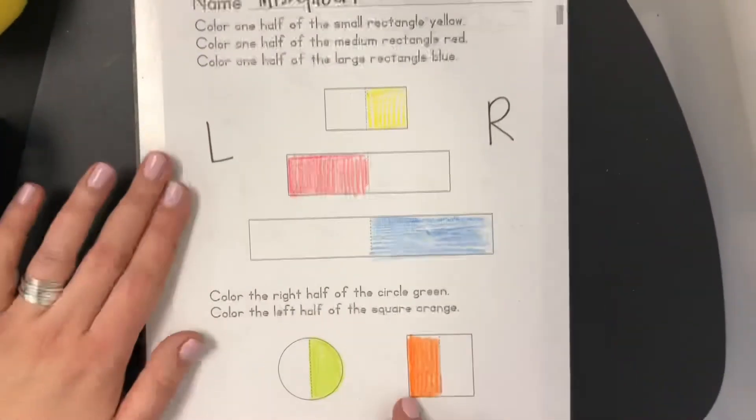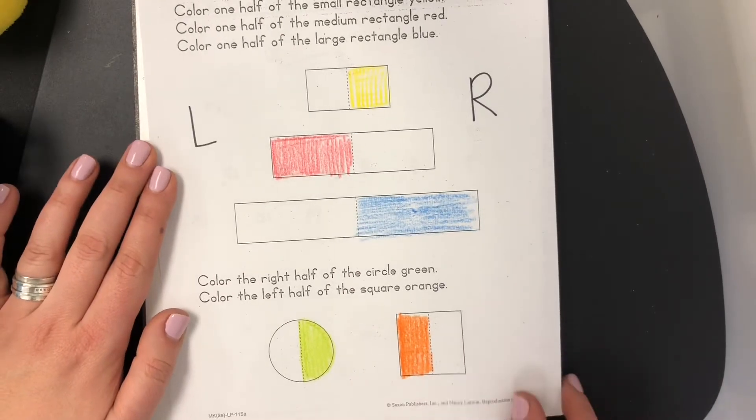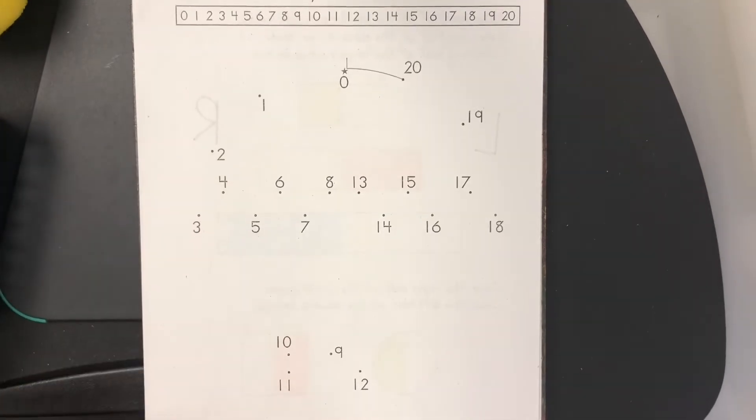Okay push pause if you need to. On the back. Sorry push pause if you need to. I should leave that there so you could push pause. On the back it says connect the dots from 0 to 20.